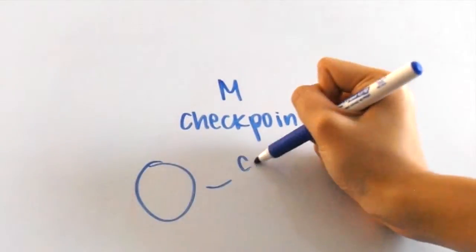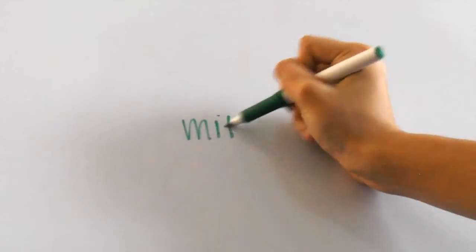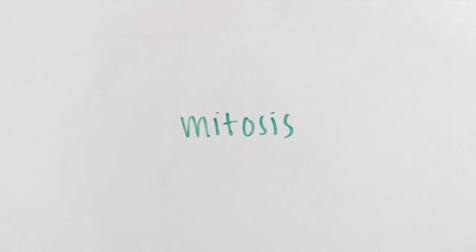The third checkpoint in the middle of mitosis allows the cell to proceed to the last stages of cell division. If the cell doesn't go through one of these checkpoints for some reason, mitosis doesn't happen, and the cell doesn't divide unless the checkpoint allows the cell to proceed.